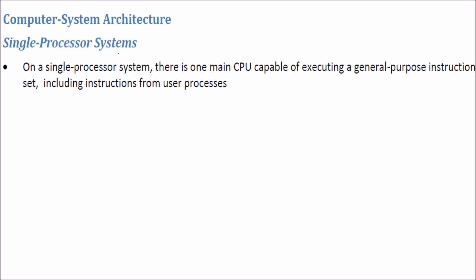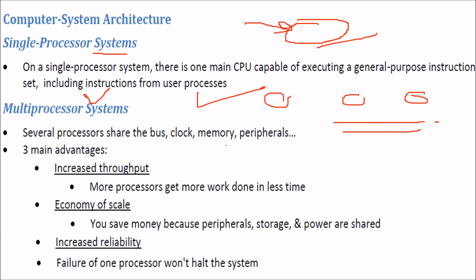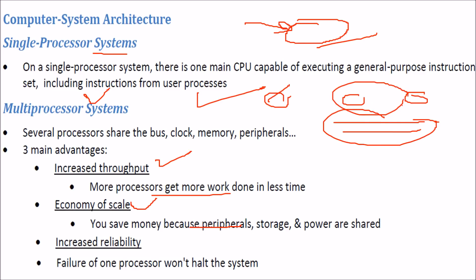Regarding computer system architecture: a single-processor system has one main CPU executing general-purpose instructions. A multiprocessor system has multiple processors sharing a common bus, clock, memory, and peripherals. Advantages include increased throughput — more processors get work done faster — cost savings from shared peripherals and power, and improved reliability. If one processor fails, others continue to work.